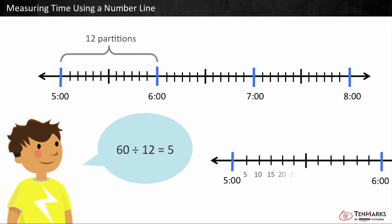Counting by 5s: 5, 10, 15, 20, 25, 30, 35, 40, 45, 50, 55, 60.